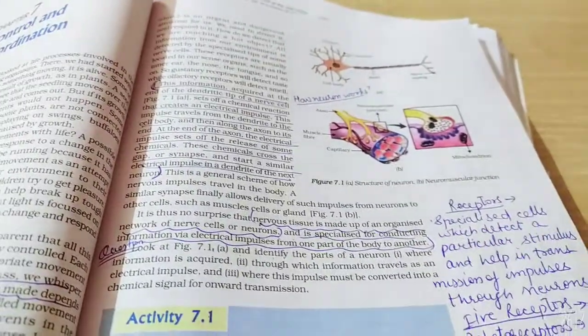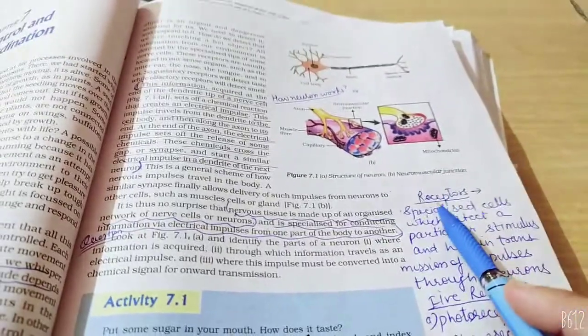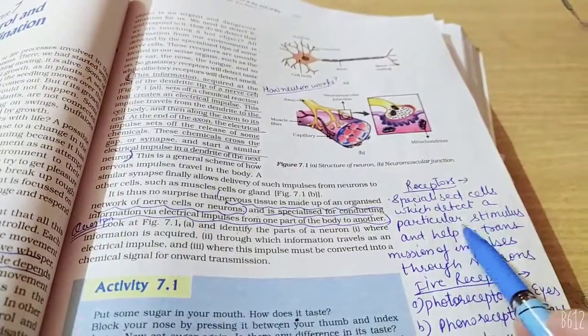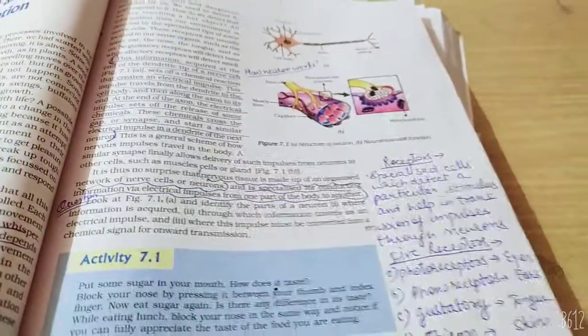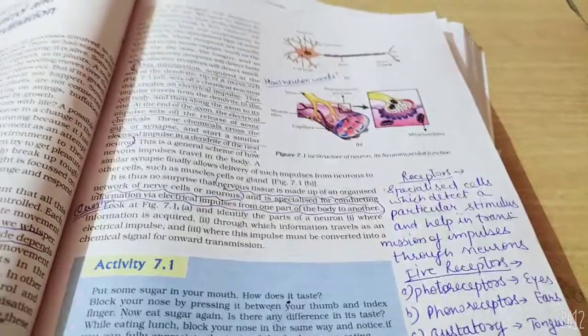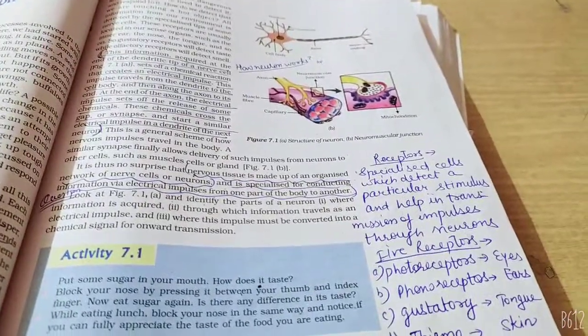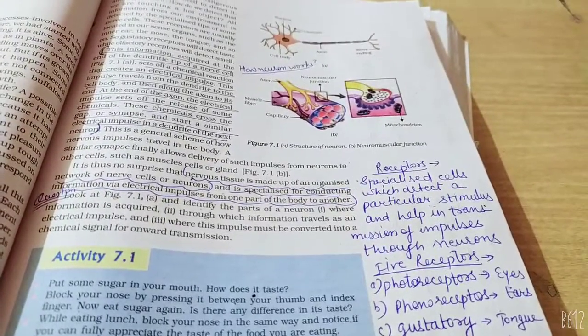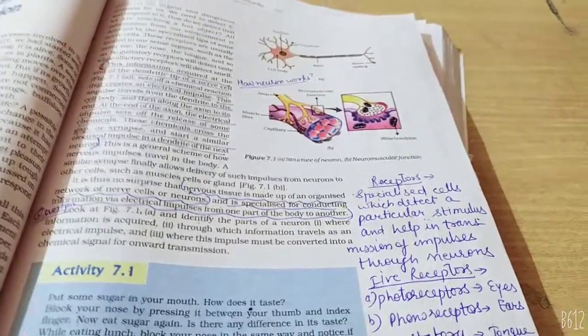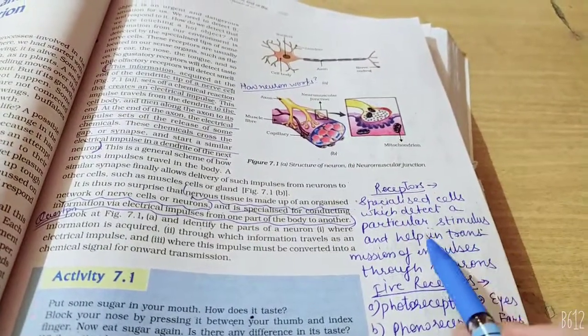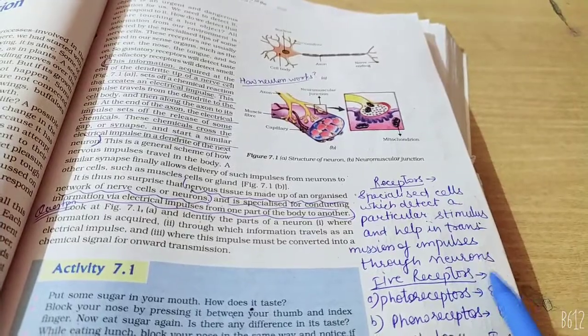There are some receptors in our body. What are receptors? Receptors are specialized cells which detect a particular stimulus. Stimulus is an action. Suppose your mother is making food. That food is a stimulus. You are smelling rice or something. It is a stimulus. Stimulus is recognized by a specialized cell. It has transmitted that information through neurons.